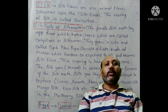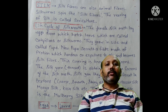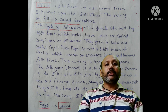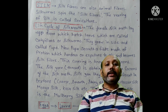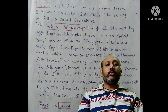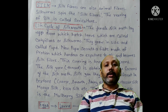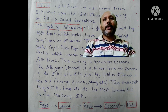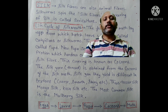Silk fibers are also animal fibers. The silkworm spins the silk fibers, and the rearing of silk is called sericulture. Life cycle of the silk moth: The female silk moth lays eggs from which hatch larvae, called caterpillars or silkworms. They grow in size and become a pupa. The pupa secretes a fiber made of protein which hardens on exposure to air and becomes silk fiber. This covering is known as the cocoon.